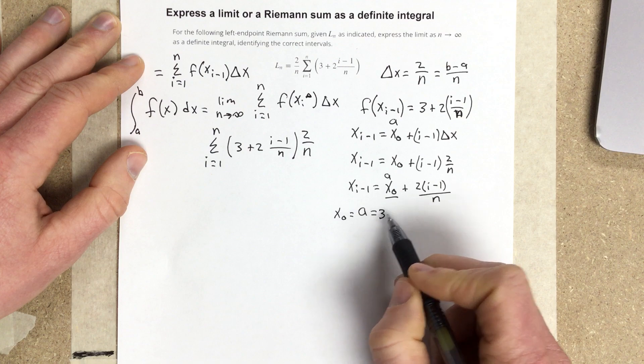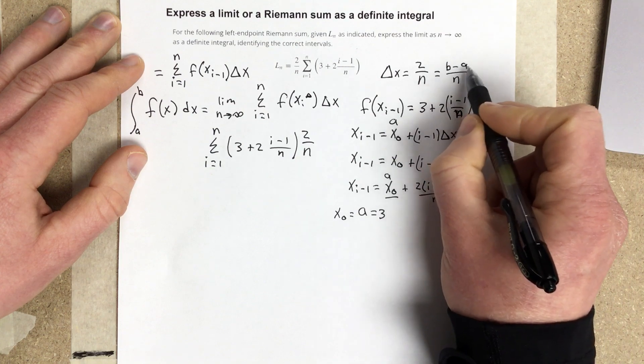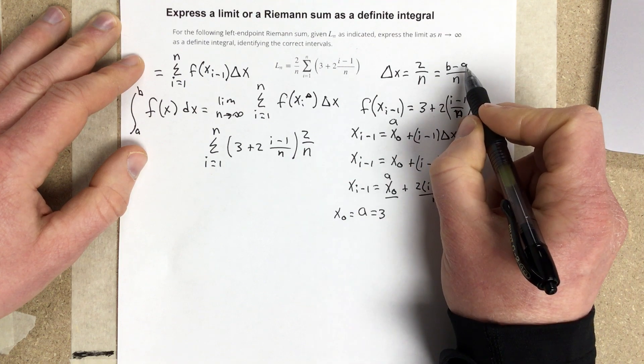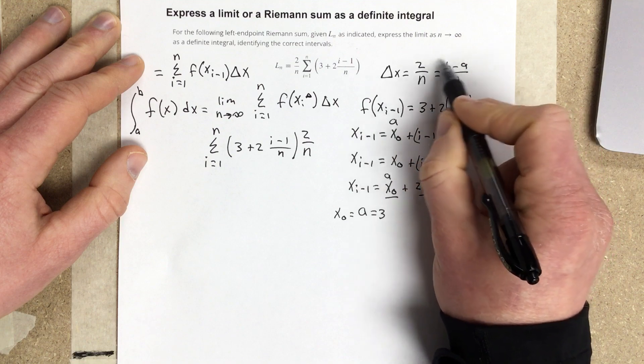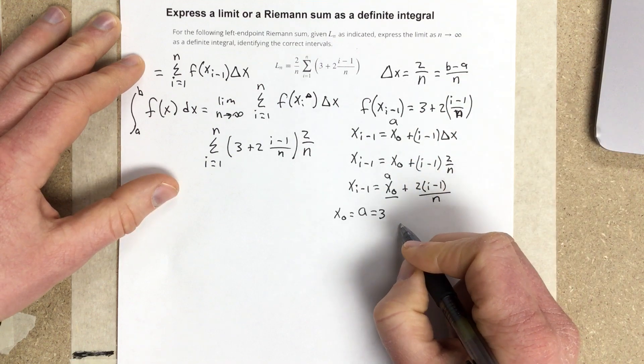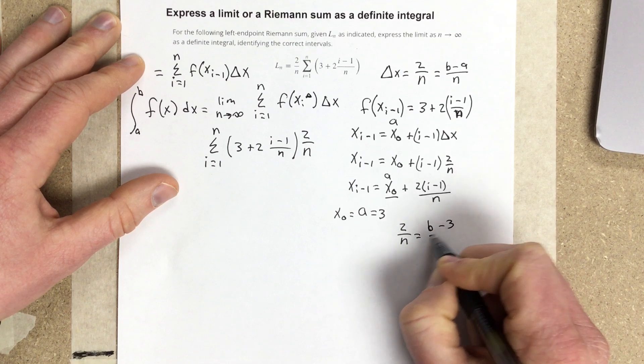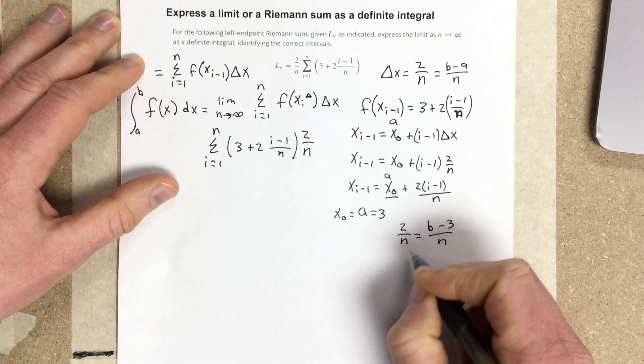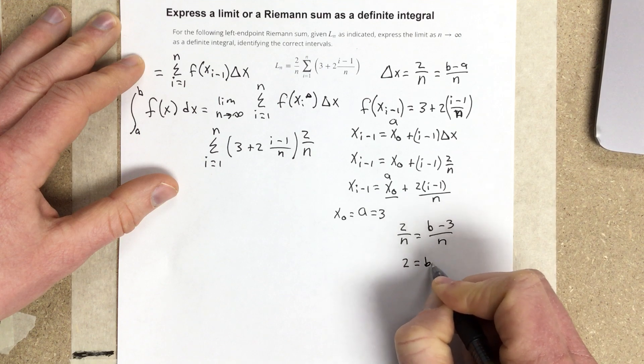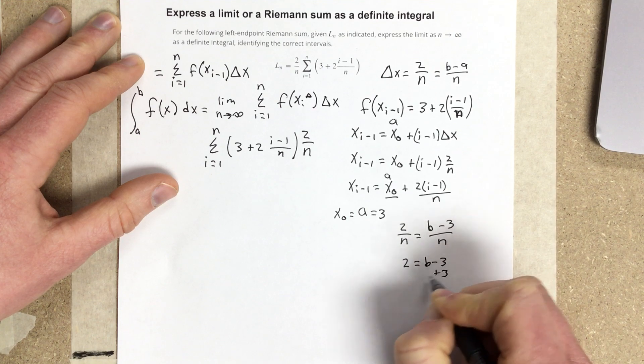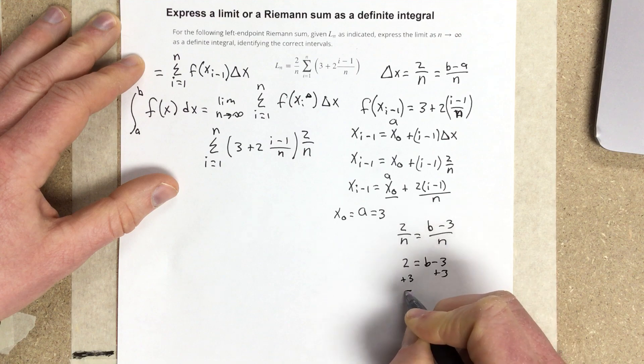Well, if we know that now a is equal to 3, we can actually figure out what b is by using this expression here. So, we can say 2 over n is equal to b minus 3 over n. We multiply by n on each side. We get 2 equals b minus 3. Add the 3. So, we now know our b value is 5.